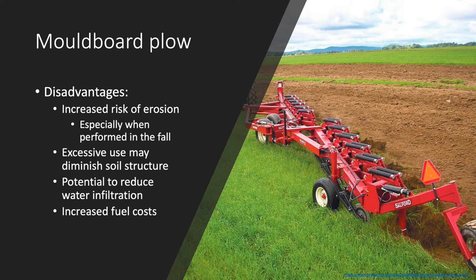Excessive use of the moldboard plow can also diminish soil structure, which reduces water infiltration, aeration, and crop root growth. Additionally, with little surface residue, rain droplets are able to freely fall on the soil surface, causing a greater degree of soil aggregate fragmentation and may potentially lead to soil crusting, which can further reduce water infiltration. The moldboard plow also requires a significant amount of energy to work such a large volume of soil, and therefore higher fuel costs are generally associated with this implement.